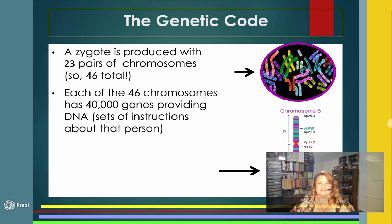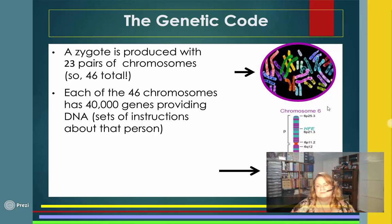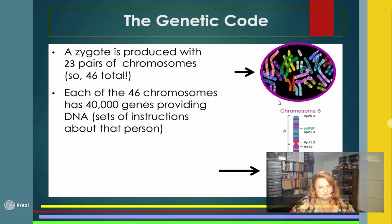You'll see chromosomes numbered — like chromosome 6, labeled HFE — which could be associated with hair color, eye color, height, or weight. Some traits are expressed immediately and some are turned on or off by the environment. We'll talk more about that.